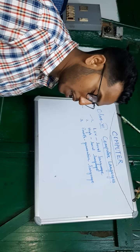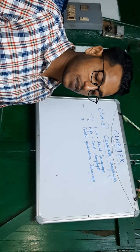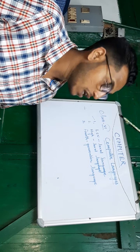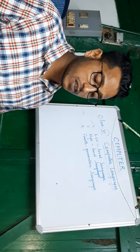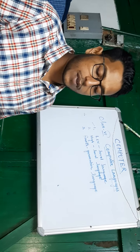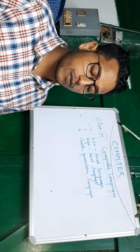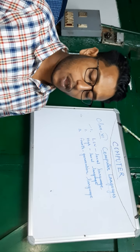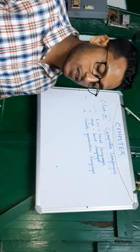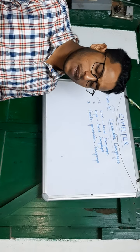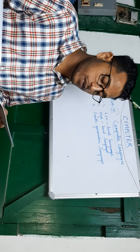A computer language is a representation of a sequence of instructions known as a program. A collection of programs constitutes software. A programming language is a formal or constructed language designed to communicate instructions to a machine, particularly a computer. Computer languages are divided into two categories.